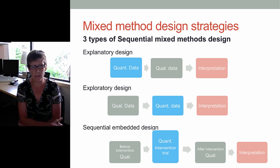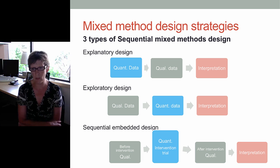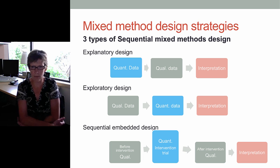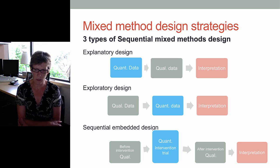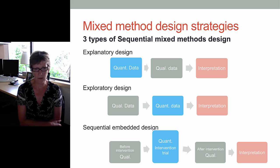The first one, which starts with quantitative data, is called sequential explanatory design. You start with the quantitative data and results, and then follow up with qualitative inquiry to explain why you have seen some of these results, and then you interpret the two together for your final results. The next is the sequential exploratory design. For example, you want to explore an issue through a survey but you're not sure what are the right questions to ask. It's useful for developing and testing a new instrument, and then you can do the quantitative instrument following, and then interpret the two together.